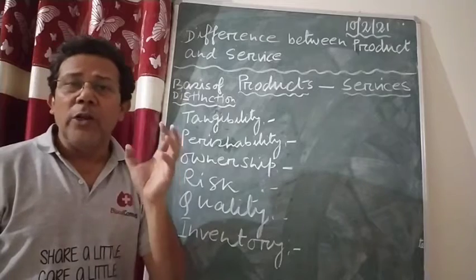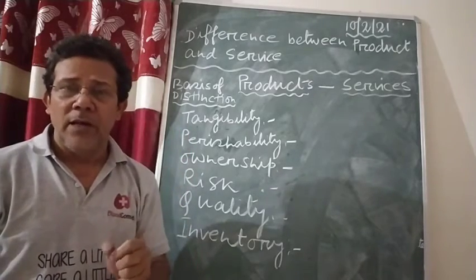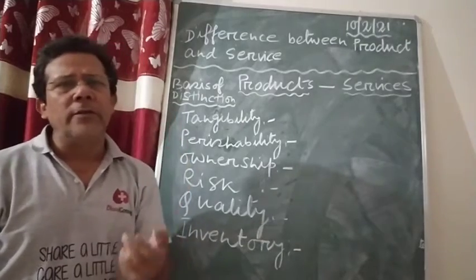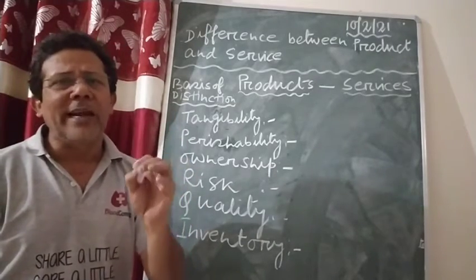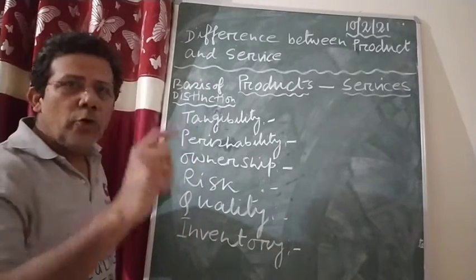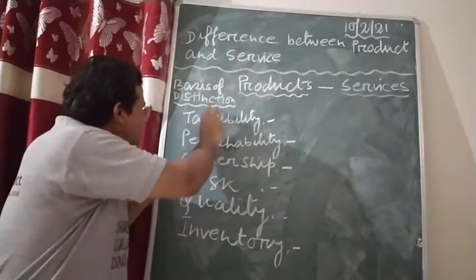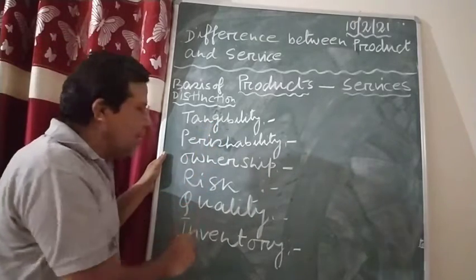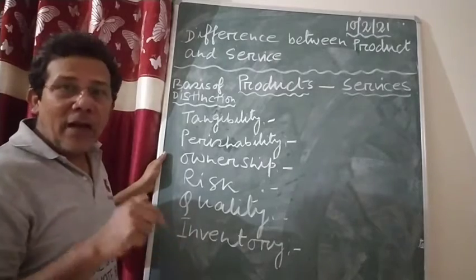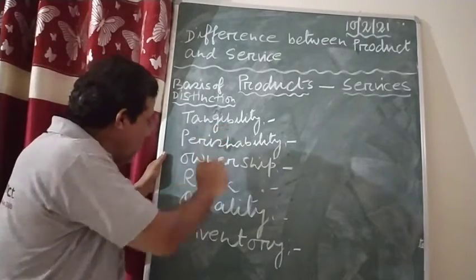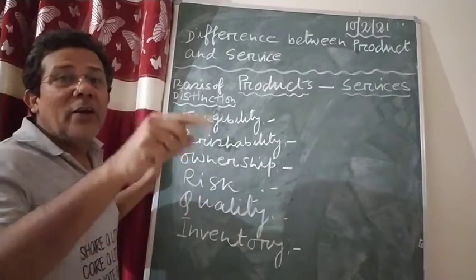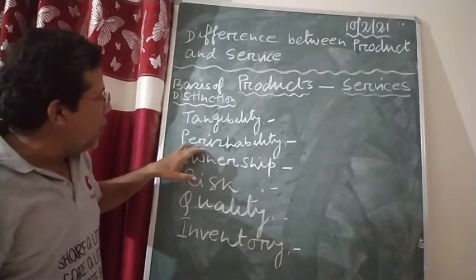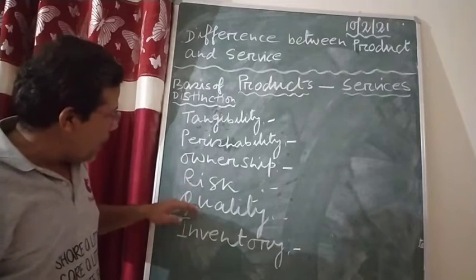These are the most important points you are supposed to write if the question comes for five marks. If it is a two-mark question, write two points, but I suggest you always write three points with the basis of distinctions. My suggestion is whenever you write the basis of distinctions, use black ink — it will attract the examiner's eyes so they can see clearly on what basis you are distinguishing them. You must know the meaning of tangibility, perishability, ownership, risk, quality, and inventory.